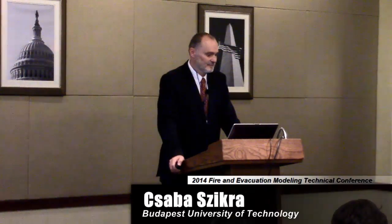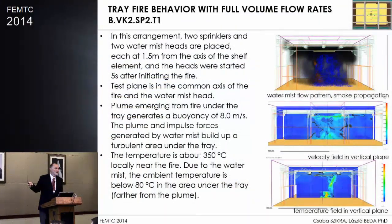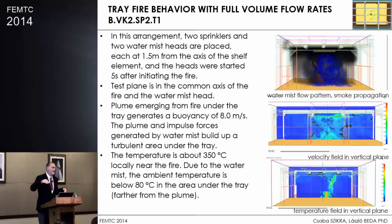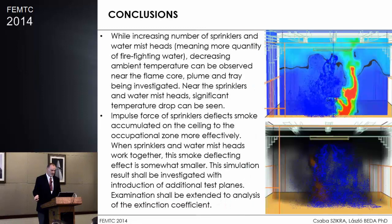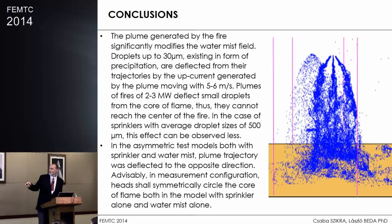Audience question: Could you go back to some slides and describe which one was the sprinkler and which was the water mist? In my experience, water mist is typically volumetric filling and both of those looked very similar. Presenter: It's symmetrical — the two in one pair are sprinklers and the two in the other pair are water mist. In the section view, this would be the sprinkler and this would be the water mist — you can see it has more spread heads, that's why it looks like that.